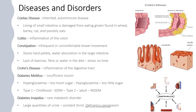Diabetes insipidus is a rare metabolic disorder where you feel constantly thirsty and produce enormous quantities of urine, caused by a deficiency of vasopressin or antidiuretic hormone. These hormones regulate the reuptake of water in the kidneys. ITEC tends to ask quite a few questions about both diabetes insipidus and diabetes mellitus.